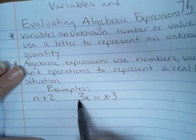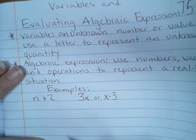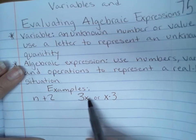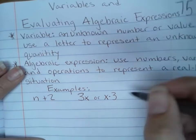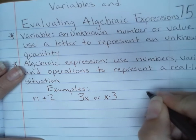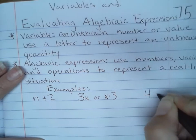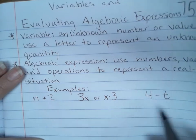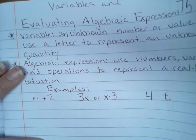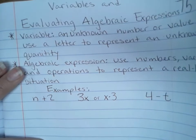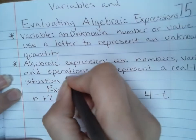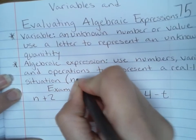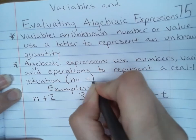But this is going to be the way you're more likely to see it. Understand this means 3 times x, which is why we want to get out of using the x for a times symbol. Another one could be 4 minus t. This means 4 take away whatever t is. These are expressions because they don't have equals. So up here in parentheses, I want you to write no equal sign.